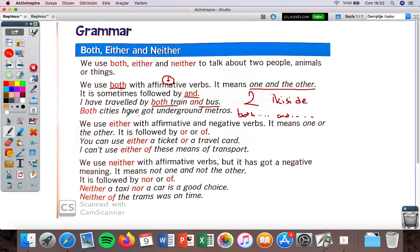Both cities have got underground metros. You can use it directly before the noun - both cities. How many cities do I talk about? Two. There are two cities and both of them have got underground metros. Generally I use 'and', or I put it before the noun, but I make the noun plural because I'm talking about two things.